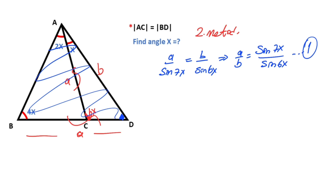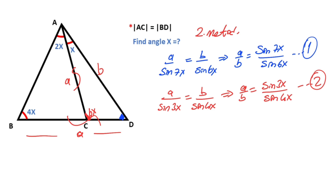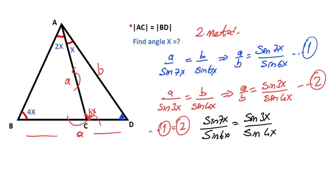If you focus on the biggest triangle, let's apply one more sine rule: A over sine 3x must equal B over sine 4x. So A over B equals sine 3x over sine 4x. This is the second equation. If we equalize the first and second equations, therefore sine 7x over sine 6x must equal sine 3x over sine 4x. Then sine 7x times sine 4x equals sine 6x times sine 3x.